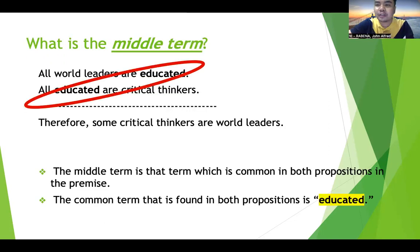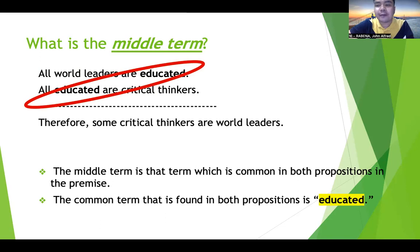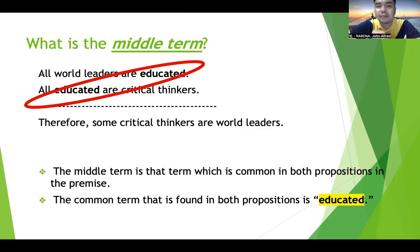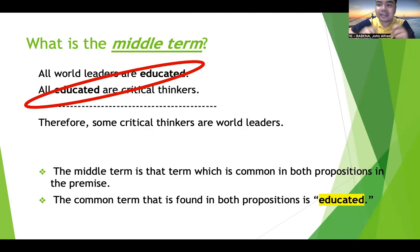What is the middle term? The middle term is the term which is common in both premises. In categorical syllogisms, we usually have two premises, and in these two premises there is one common term — that is the middle term. In our example, 'all world leaders are educated' and 'all educated are critical thinkers' — the common term is educated. So educated is our middle term.